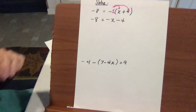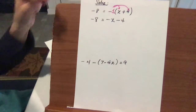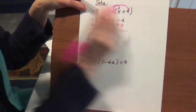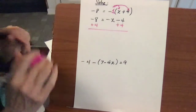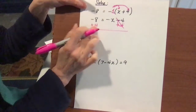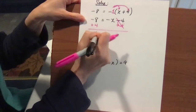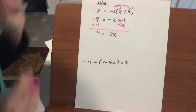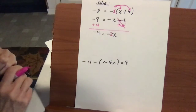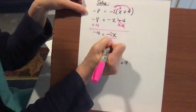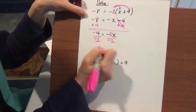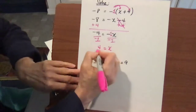Now we go about solving this two-step equation by adding 4 to each side. The variable is on the right side, and that's okay — you can leave it there. Negative 8 plus 4 is negative 4 equals negative x. Since there's a negative 1 in front of x, divide by negative 1 on both sides, and you get 4 equals x. That's your answer.